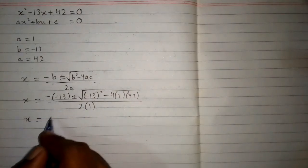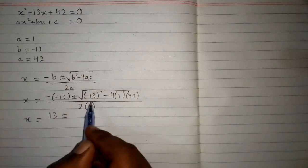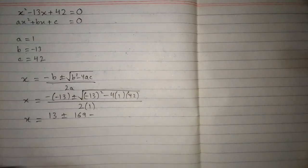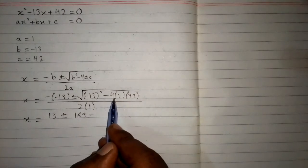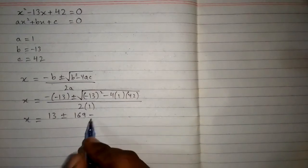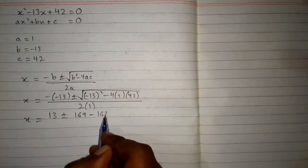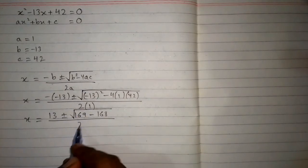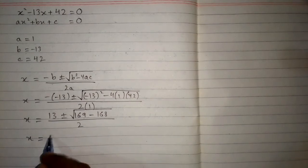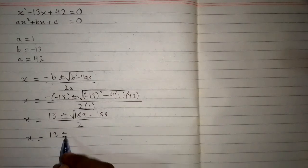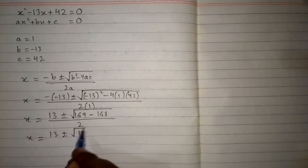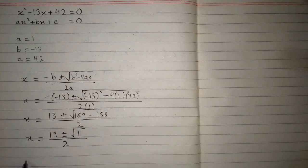Minus times minus 13 is 13, plus minus square root of minus 13 squared is 169, then minus 4 times 1 times 42 is minus 168, upon 2. Simplifying further, 169 minus 168 is 1, so we have the square root of 1, which is 1.